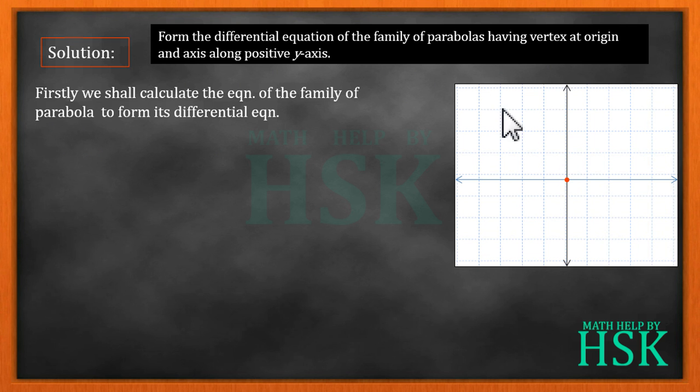This means that the parabola would be symmetric along this positive y-axis, so the shape of the parabola would be like this. We can write the equation of the parabola as x² = 4ay.